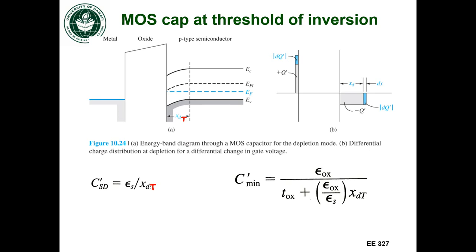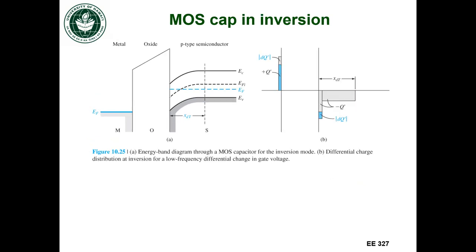If I then bias the MOS capacitor further so it goes into inversion, now what I'm going to be doing is when I change voltage I'm going to be changing the charge on the metal, but I created that inversion layer. So I'm actually changing the amount of charge in the inversion layer.